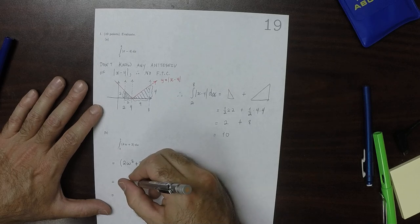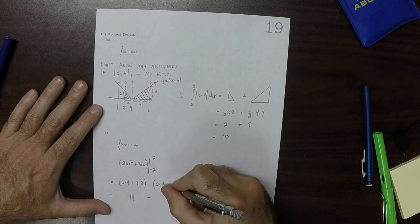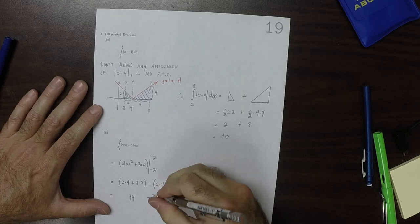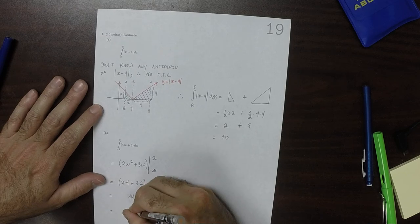So that would be 8 plus 6 is 14, minus 8 minus 6 is 2, so the answer is 12.